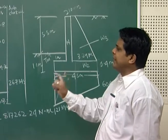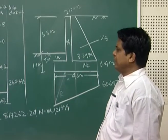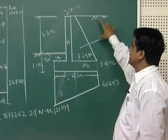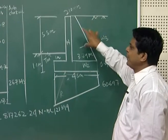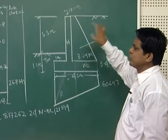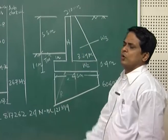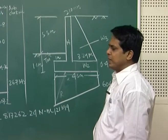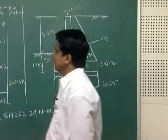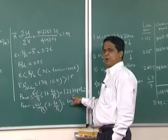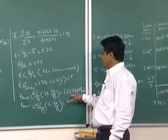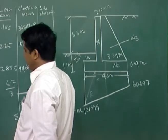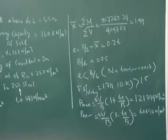From stability analysis we calculate the maximum and minimum base pressures: P_max = V/B × (1 + 6E/B) = 121,394 N/m² and P_min = V/B × (1 − 6E/B) = 60,697 N/m². The pressure distribution below the base slab is trapezoidal. Dimensions are confirmed acceptable; stability analysis is complete. In the next class we proceed to the structural design of the counterfort retaining wall.